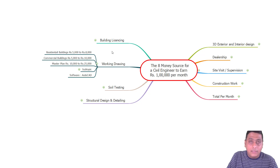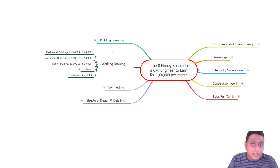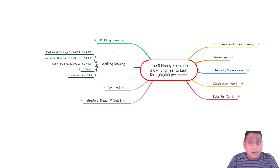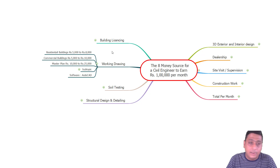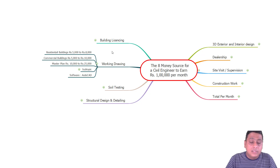Next is working drawings — the drawings used for actual execution of the project. I'm telling you the normal market rates for small consultants, not big consulting agencies or architects. These are rates for a civil engineer when a client comes directly to you and asks you to prepare a drawing.